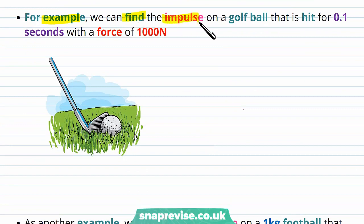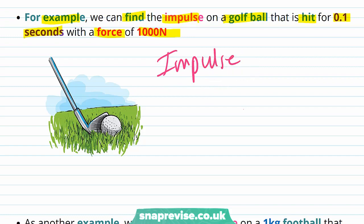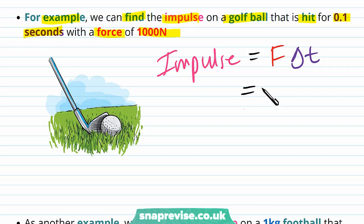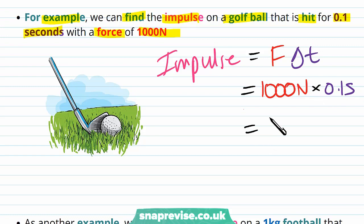For example, we can find the impulse on a golf ball that is hit for 0.1 seconds with a force of 10,000 newtons. Impulse is equal to the force applied times the time for which the force acts. We've been told the force has magnitude 1000 newtons and it's applied for 0.1 seconds, so we multiply to get an impulse of 100 newton seconds.